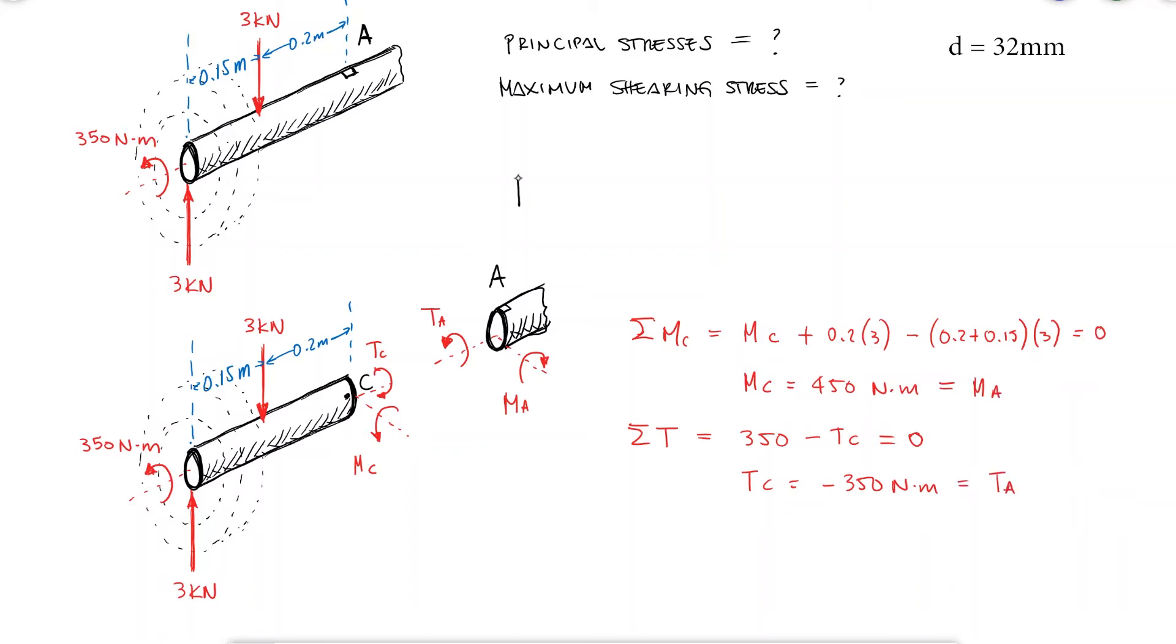For a stress element A, where the left face is facing the axis of the shaft, we would see that the torque is causing a torsional shearing stress, and the bending moment, a compressive normal stress.